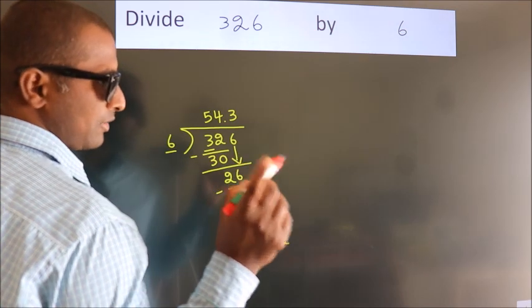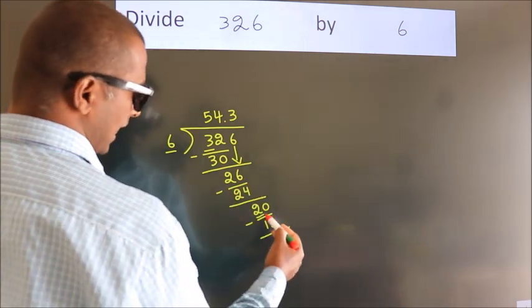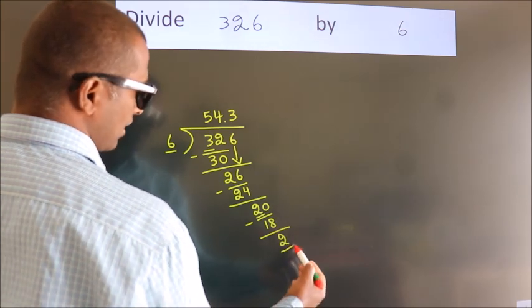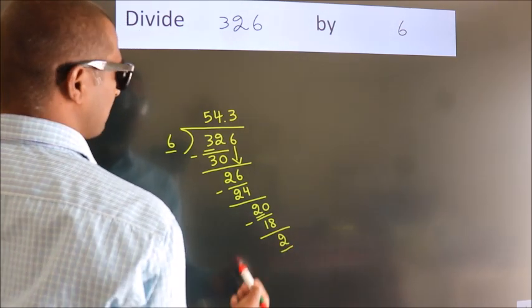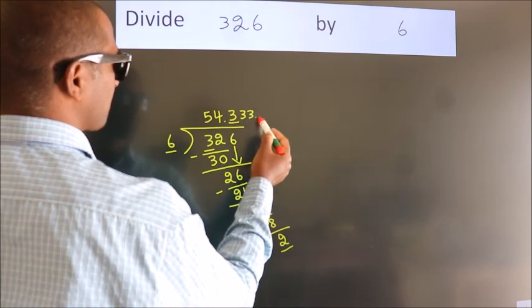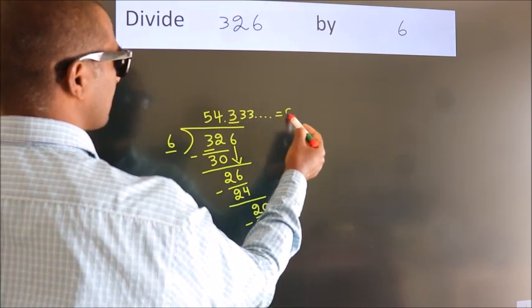Now you observe. We had 2 here, and we got 2 again. That means this number keeps on repeating. So this is our quotient.